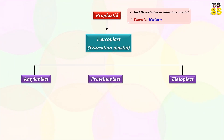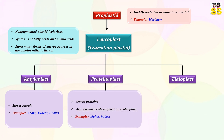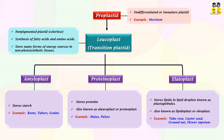Leucoplast is a colorless plastid involved in the biosynthesis of fatty acids and amino acids, storing energy sources in non-photosynthetic tissues. Amyloplast is a starch-storing plastid found in potato tubers, roots, and grains. Aleuroplast or proteoplast or proteinoplast stores proteins, found in maize and pulses. Elaioplast or lipidoplast or oleoplast stores lipids in lipid droplets called plastoglobules; examples include tubers, castor seed, and groundnut.